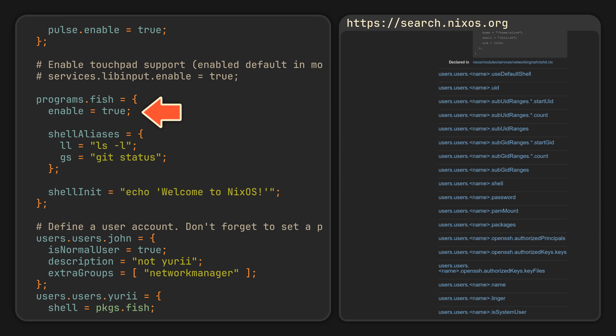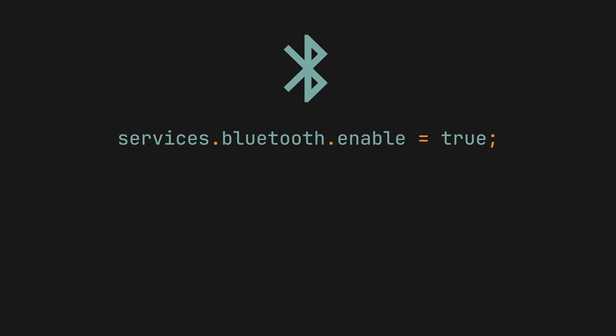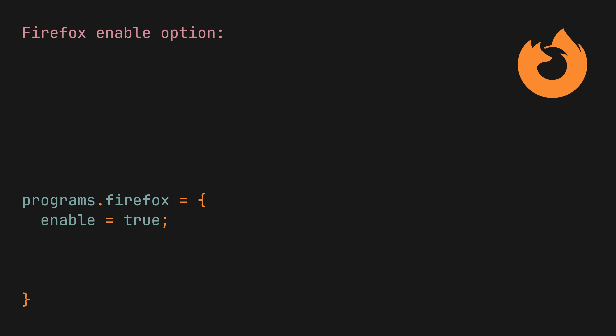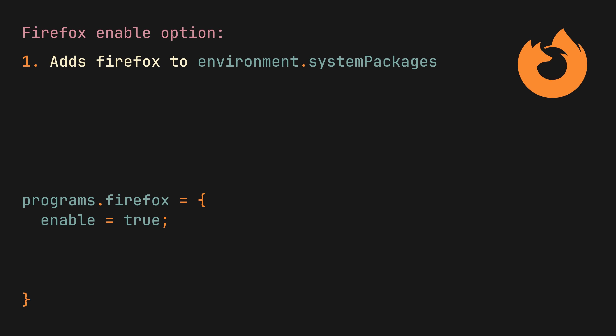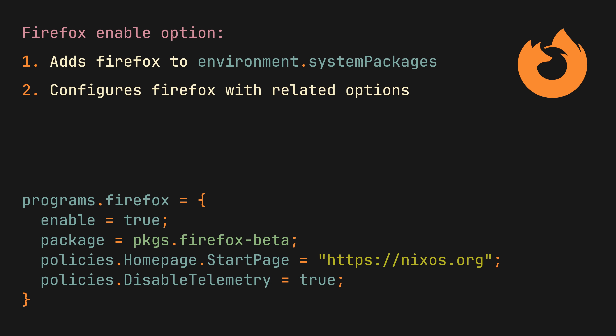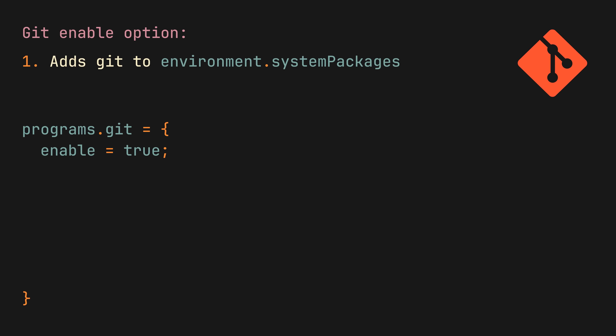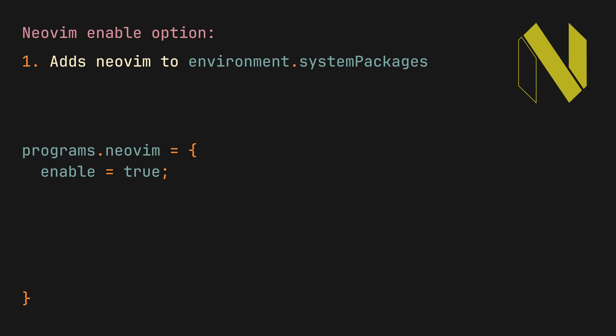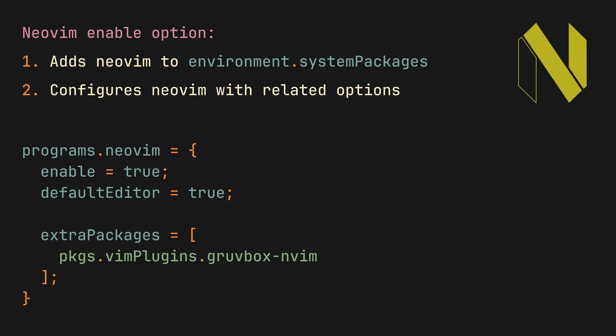Talking about these enable options, they are actually one of rather misunderstood aspects of NixOS by many beginners. It does make sense to enable something like Bluetooth, but why would you need programs.firefox.enable when you could simply add Firefox to your system packages instead? The reason is simple: the enable options provide you with everything you need to use a piece of software and let you configure it. So under the hood, programs.firefox.enable will actually add Firefox to your system packages and then also configure it using any related options you have set. Similarly, programs.git.enable will add git and let you configure it, and programs.neovim.enable will add neovim and let you configure it.